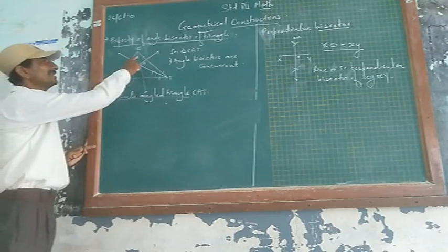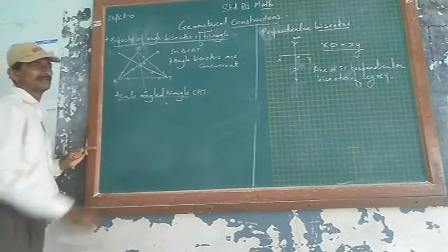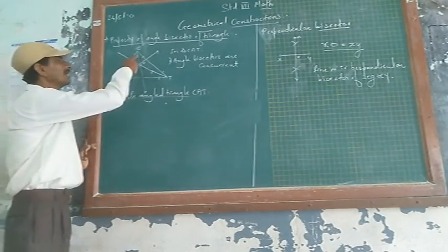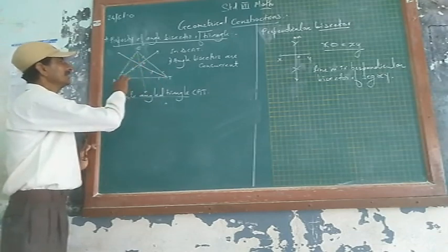Draw Angle Bisectors of each angle. Triangle has 3 angles. You have to draw Angle Bisectors of each angle in this way.